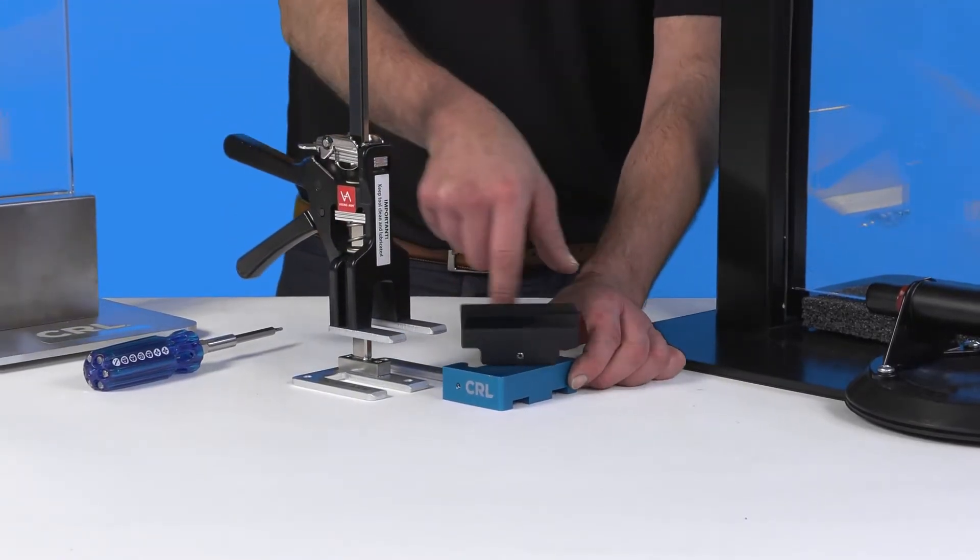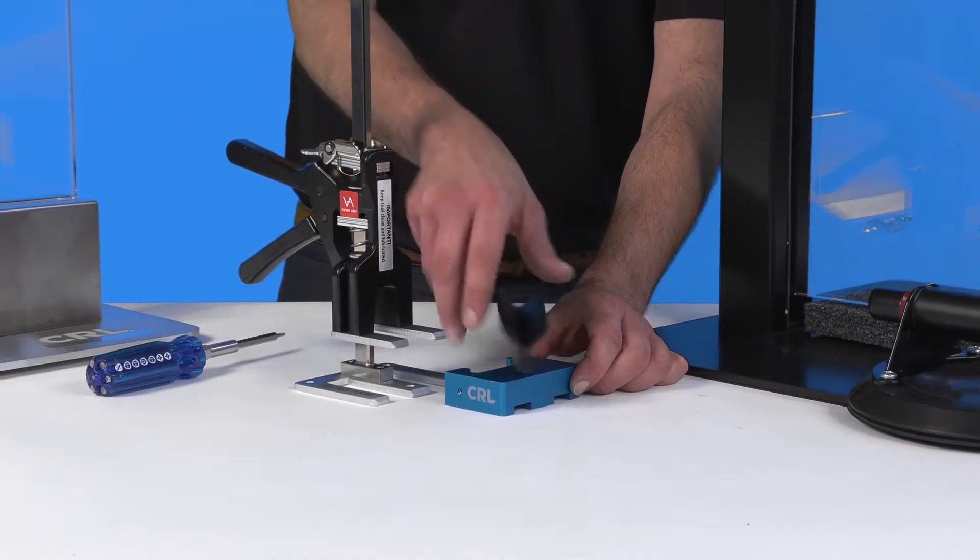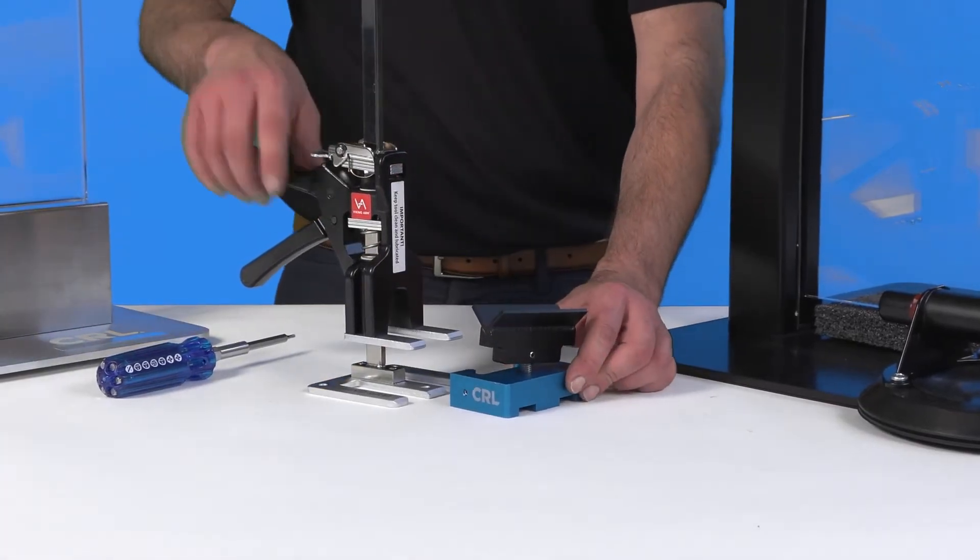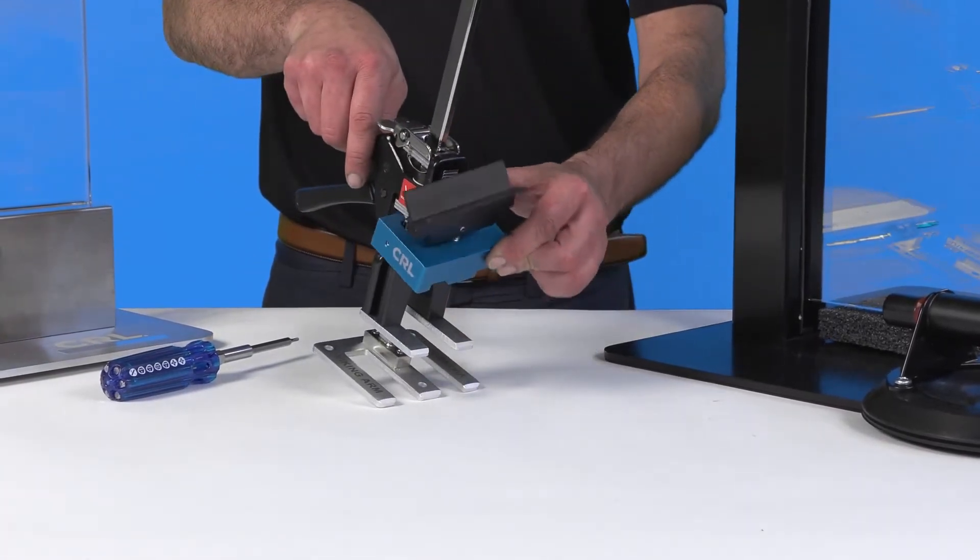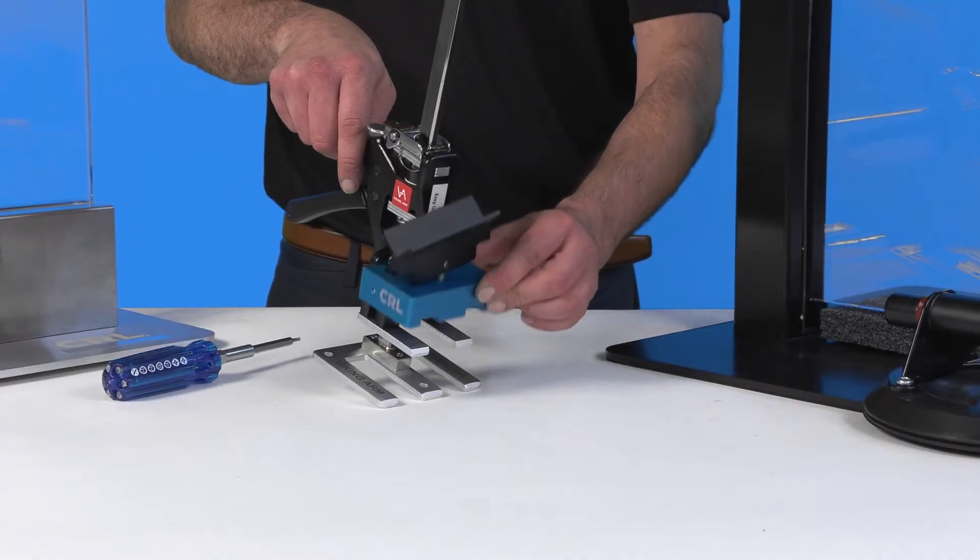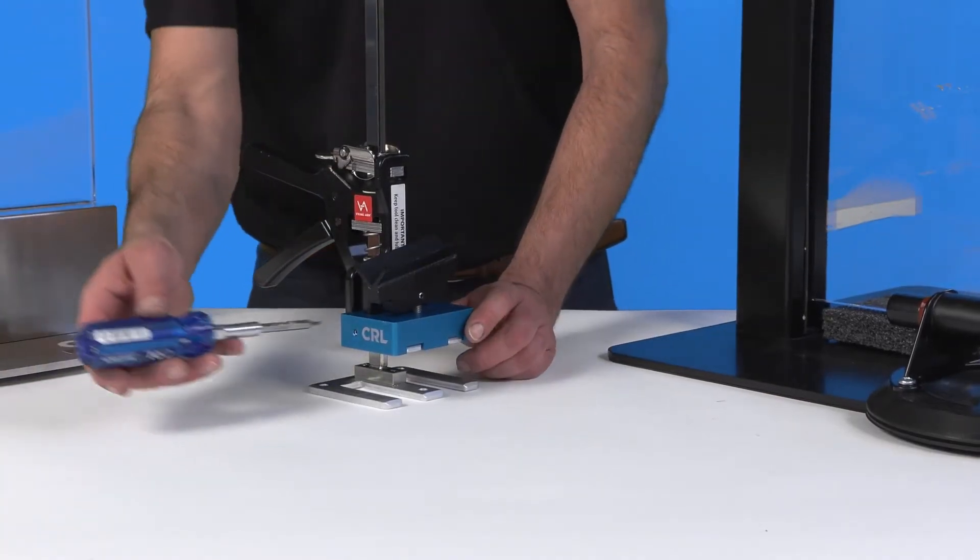Take your GP3-100 attachment. Rotate the adjustment head. Slide it onto your Viking arm tool and fasten securely using a 2.5mm Allen screw.